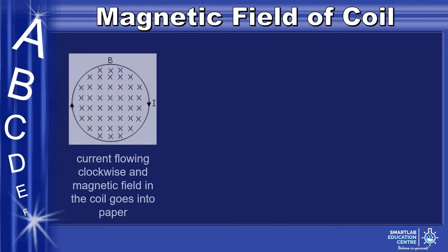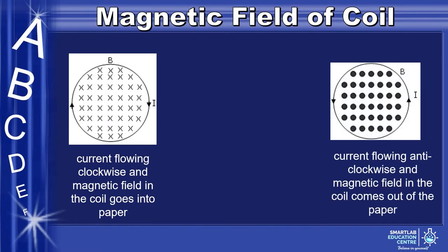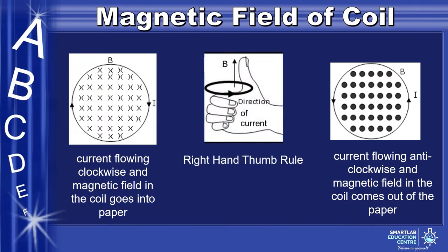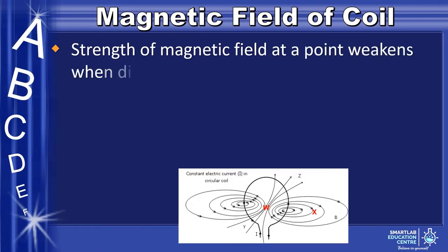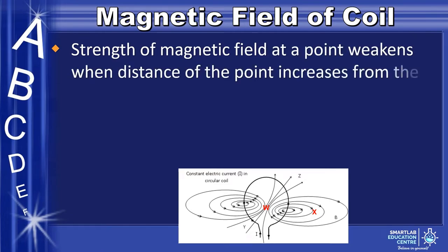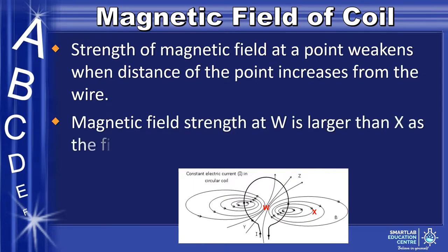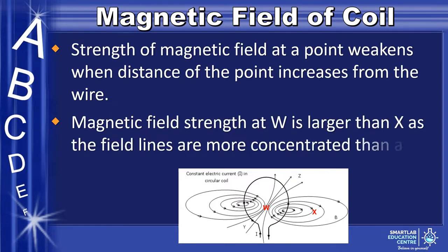When the current goes clockwise in a coil, the magnetic field goes into the paper. In contrast, when the current flows anti-clockwise, the magnetic field moves out of the paper. We can remember this visually by using the right-hand thumb rule. The strength of the magnetic field at a point weakens when the distance of the point increases from the wire. Magnetic field strength at W is larger than at X, as the field lines are more concentrated.